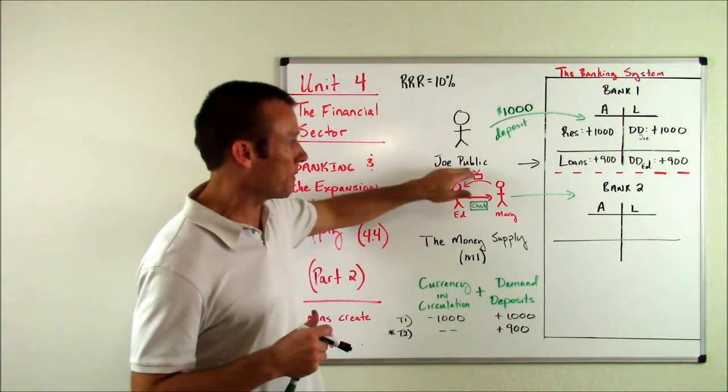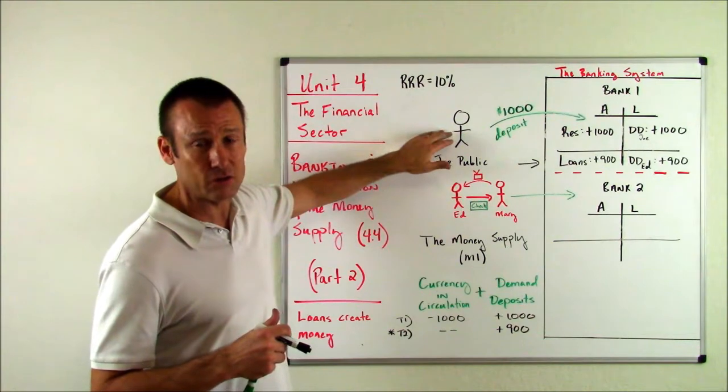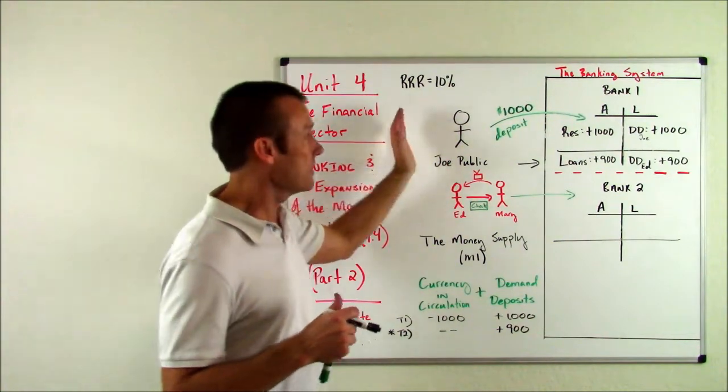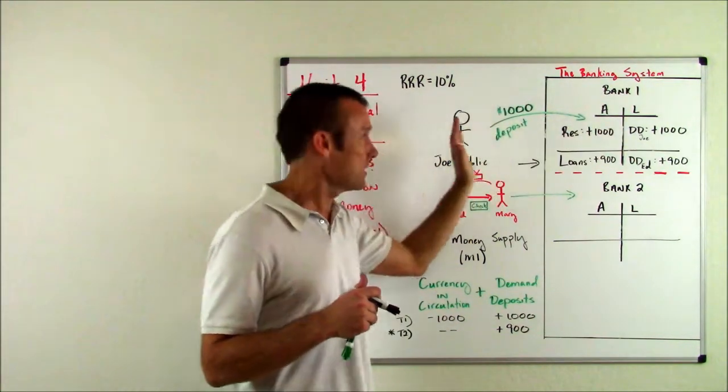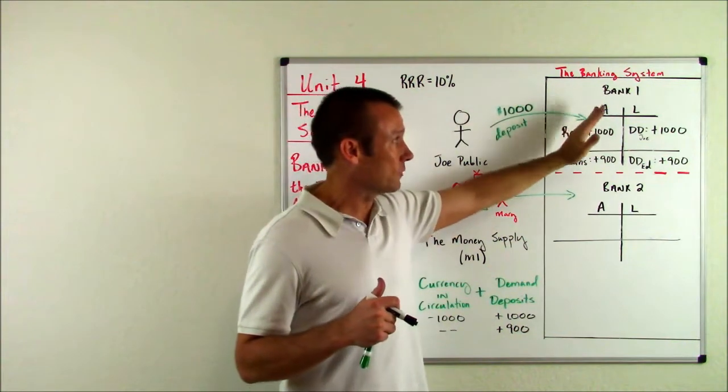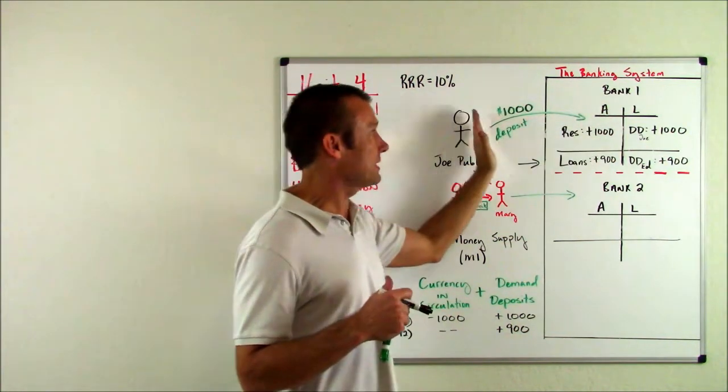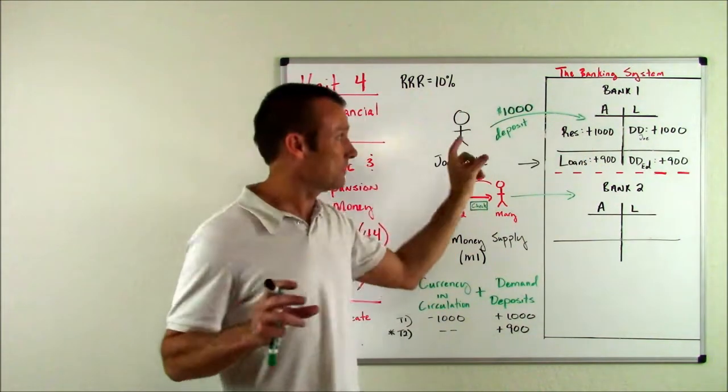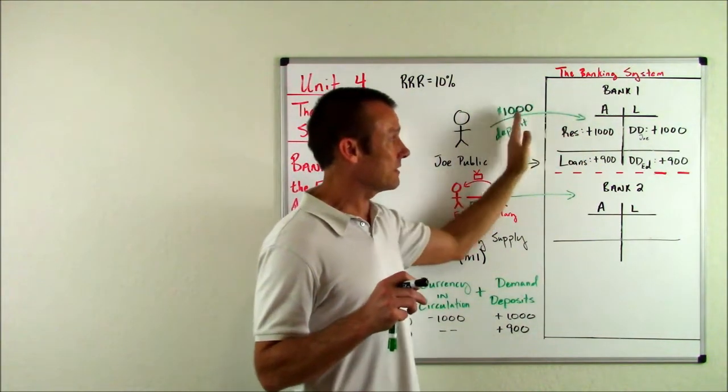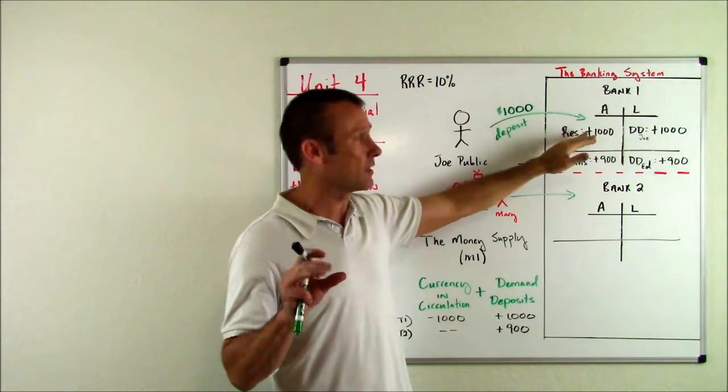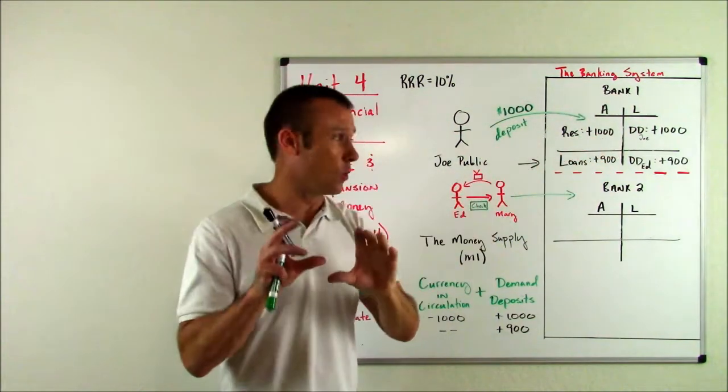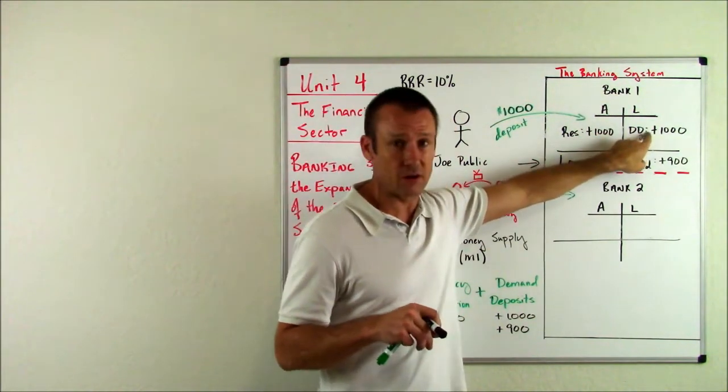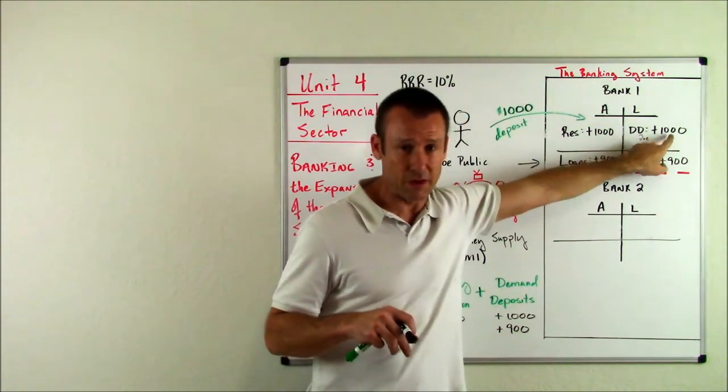In part one, we had Joe Public. He had a thousand dollars of currency in circulation in his hands and he made a deposit. When that currency in circulation went into bank one, it ceased being money and became reserves. That currency ceased being money, it was no longer in circulation. It is now reserves. And Joe, of course, got his checking account, his demand deposit credited $1,000.